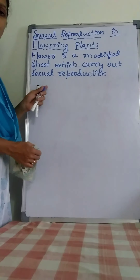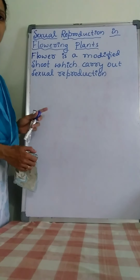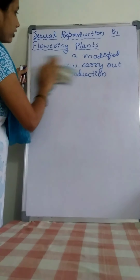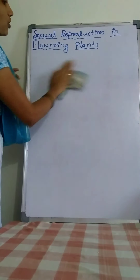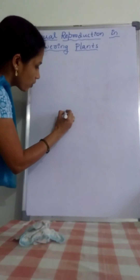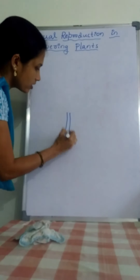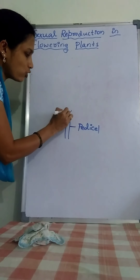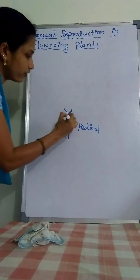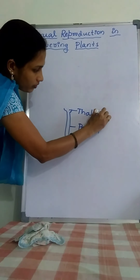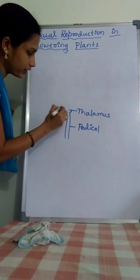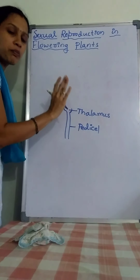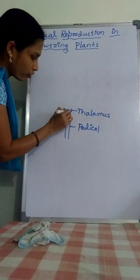Now let us discuss the structure of a flower — how the structure of the flower is and what it contains. The stalk of the flower is called the pedicel. The broad base of the flower is called the thalamus. Thalamus contains four different parts of the flower.